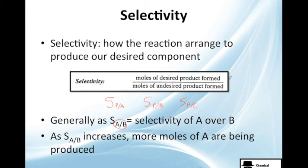Especially, you know, we want to increase this. So the larger number we have in selectivity, the better. Because we will have more desired products formed compared to the undesired products.